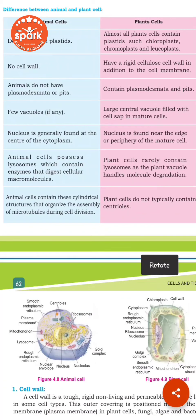Animal cells contain centrioles, which are cylindrical structures that organize the assembly of microtubules during cell division. Animal cells have these microtubules organized by centrioles, but plant cells do not have the typical centriole structure found in animal cells.